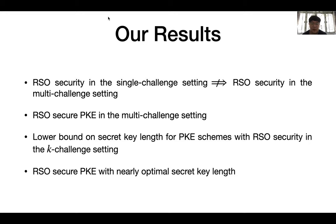We first show that RSO Security in the single-channel setting does not imply RSO Security in the multi-channel setting, by giving a counter-example that is RSO secure with only one ciphertext per key, but is not secure even if the public key is used to encrypt two messages. Then, we construct an RSO secure PKE scheme in the multi-channel setting for arbitrary polynomial number of channels. We also give a lower bound on the secret key length for any PKE scheme that is RSO secure in the multi-channel setting, and construct a concrete PKE scheme that nearly satisfies this lower bound.